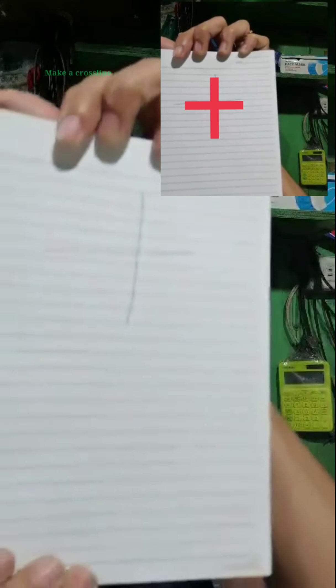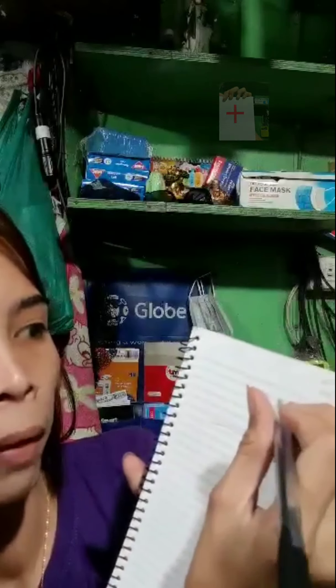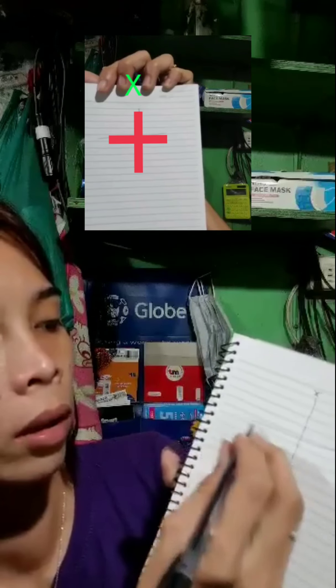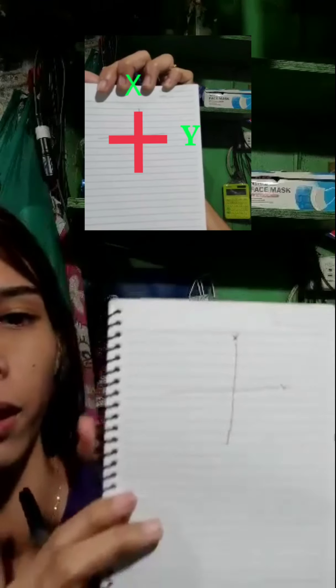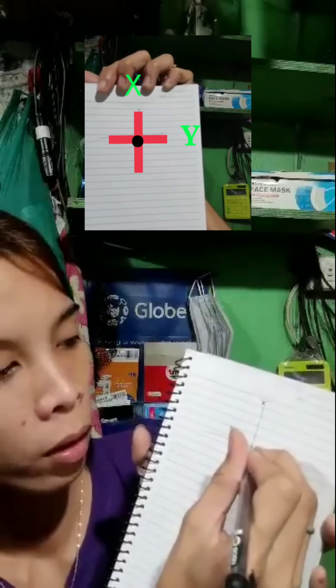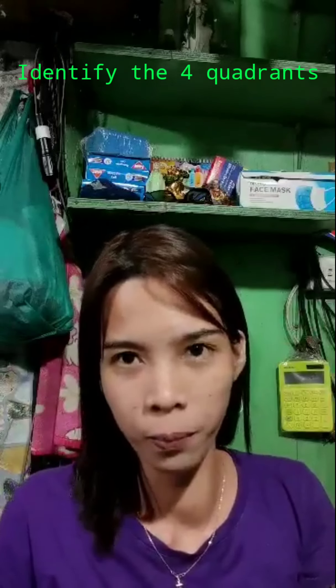We're going to make a cross line like this. On the horizontal part, this is the x-axis, and on the vertical line is the y-axis. That is our unfinished graph, and then we're going to put a dot on the center. So that is the center, and our graph looks like this.